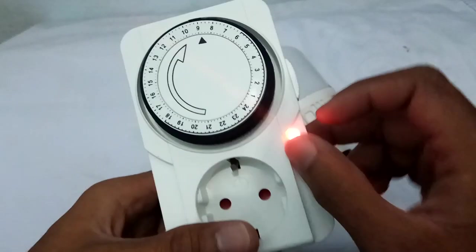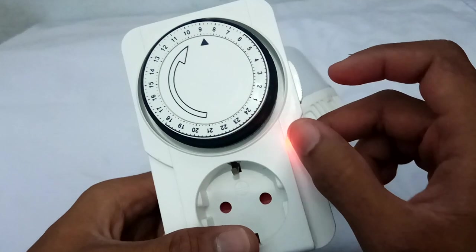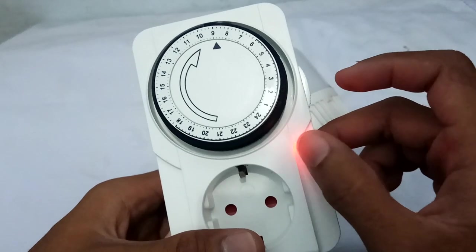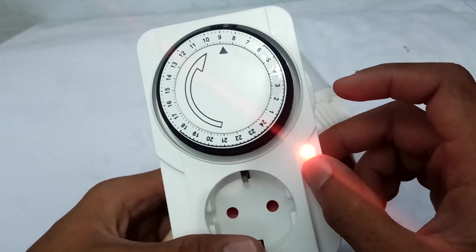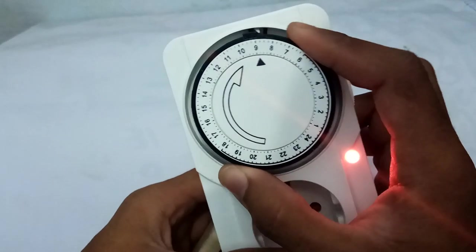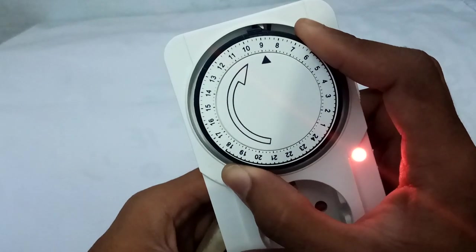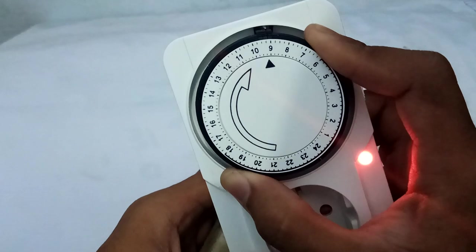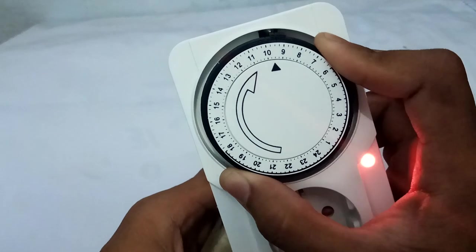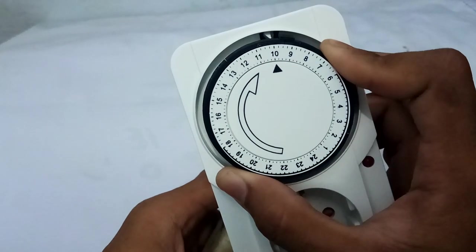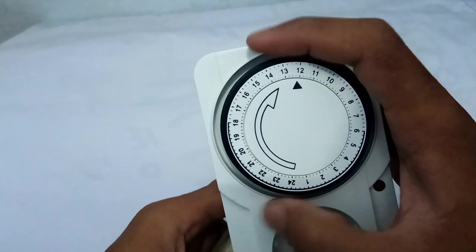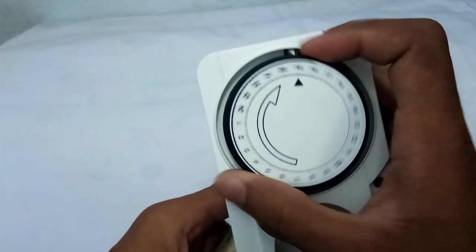This red lamp shows that the electrical device turned on. And when the pins pass that white point like this one, it will turn off again. And it will go on, off, on, off.